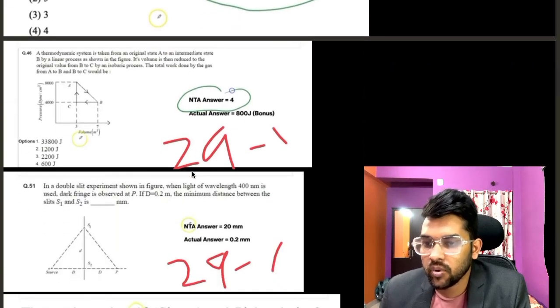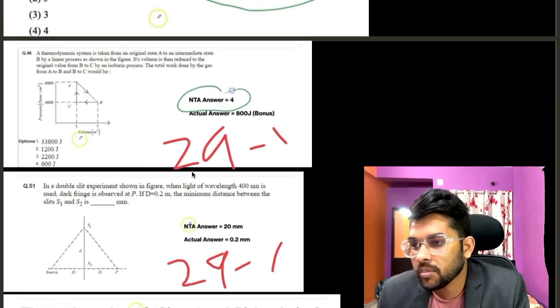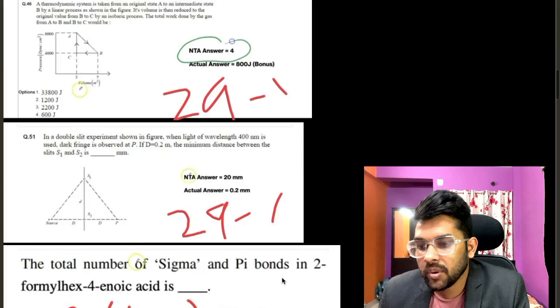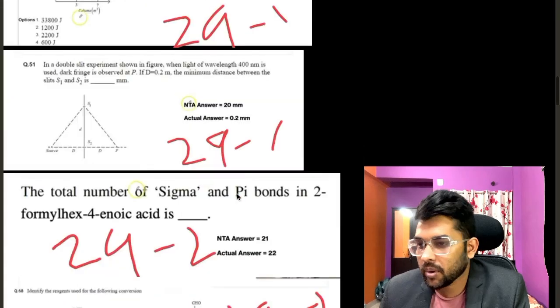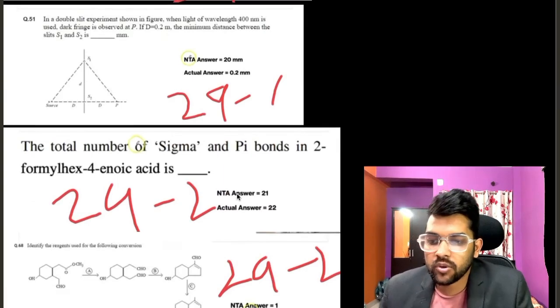Now if you talk about the next thing, that is 29 first shift, then there are two questions. One is related to the bonus problem that is from thermodynamics chapter. And then if you go to the second one, again the answer is 20 mm by NTA, but the actual answer will be 0.2 mm.